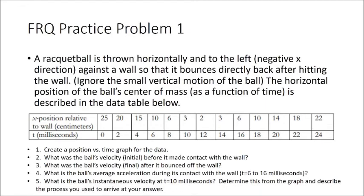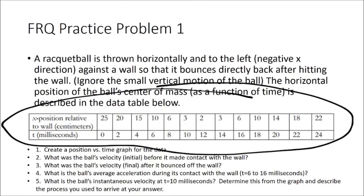Now the first free response question: a racquetball is thrown horizontally against the wall and bounces back, ignoring vertical motion. We have a data table of horizontal position as a function of time in centimeters and milliseconds. We need to create a position-time graph, find the ball's initial velocity, its final velocity, calculate average acceleration while in contact with the wall (between 6 and 16 milliseconds), and determine instantaneous velocity at about 10 milliseconds from the graph.